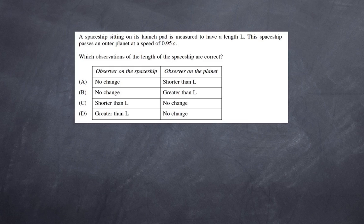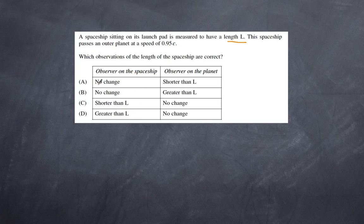This question is about length contraction. An object that is moving will have its length contracted due to relativistic motion. To observe an object's proper length, you must be in its same frame of reference — that length is L. An observer on the spaceship is in the same frame of reference, so they see no change to the length. But an observer on the planet will see a contracted, shorter length. Therefore the answer is A.